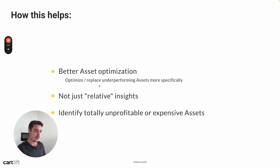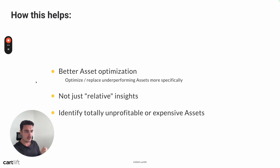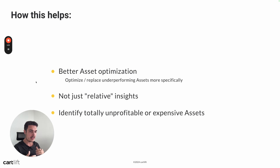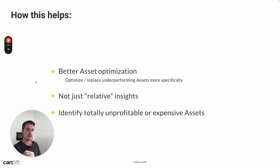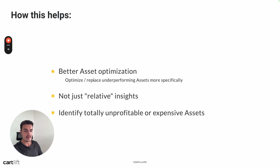You can now also identify totally unprofitable or super overly expensive assets. If you notice that an asset gets a lot of attention but it's not generating any conversions, or maybe they are simply super expensive with a very high cost per conversion, you will now be able to compare that to Google's estimation. What does a poor performing asset actually mean? What does a best performing asset mean? I haven't done a full-scale comparison yet, but I'll definitely share that in a future video where I talk about how a good or best or poor asset correlates with conversion data.